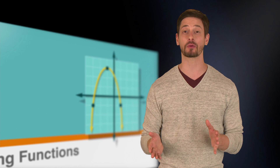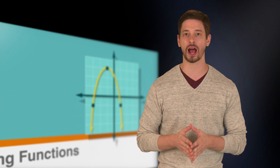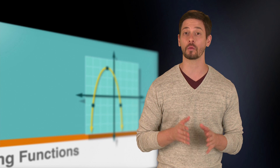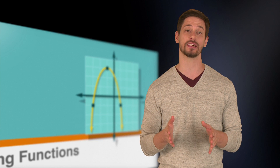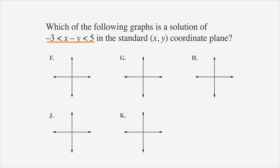In our next ACT problem, we'll use points on the graph to figure out which answer choice is correct. Which of the following graphs is the solution of x minus y is greater than negative 3 and less than 5 in the standard xy coordinate plane?